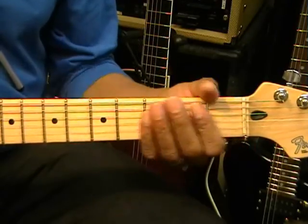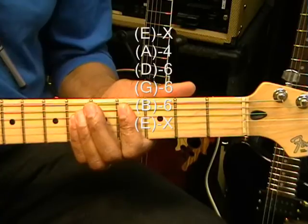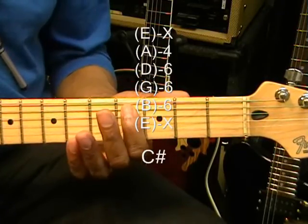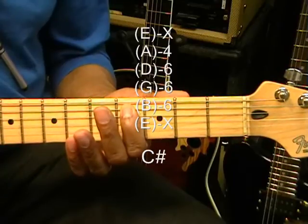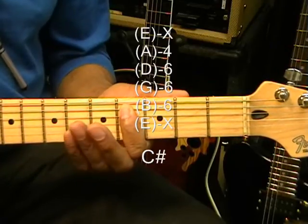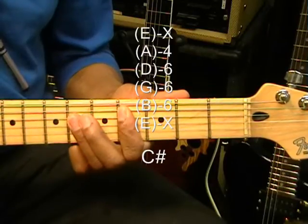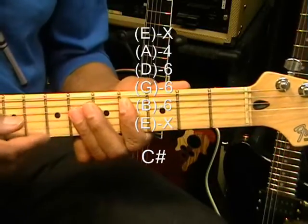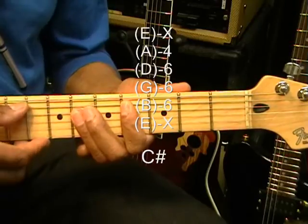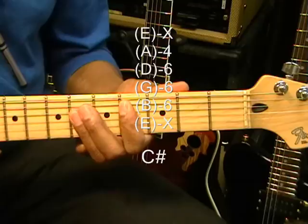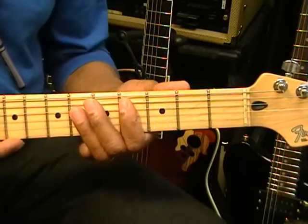C sharp. That's a bar chord. We're going to place the 1st finger on the A string 4th fret, and bar everything with the ring finger at fret 6, and we're not going to strum the high E. Strumming from the A string like that. And that's a major. That's C sharp major.